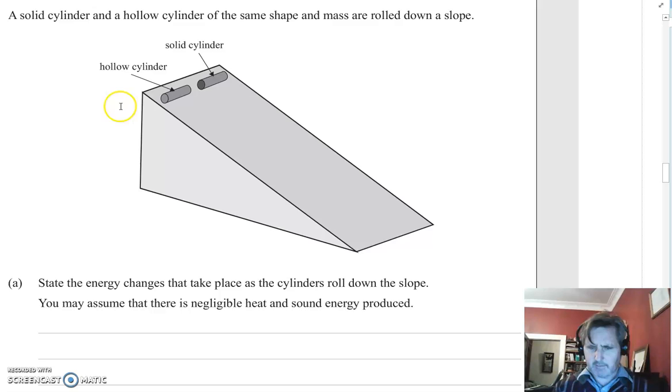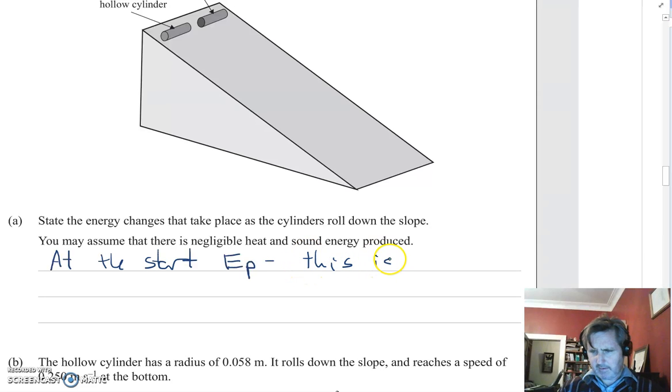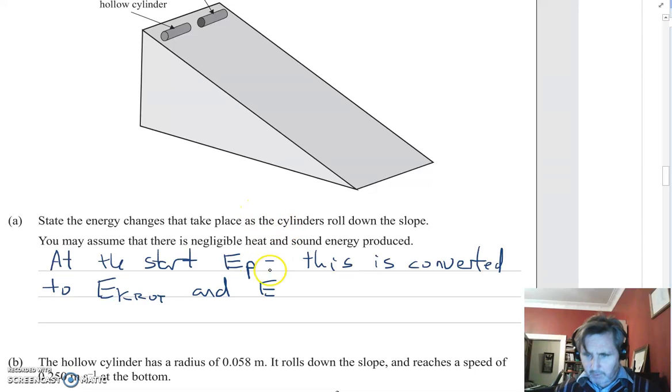So we know at the start that we start with gravitational potential energy, EP. This is converted to EK, two types of EK here: rotational kinetic energy and linear kinetic energy. Because it's going to be moving translational motion, or linear, it's going to go long ways compared to the slope. It's also going to turn compared to the slope, so it's going to have both linear and rotational kinetic energy.